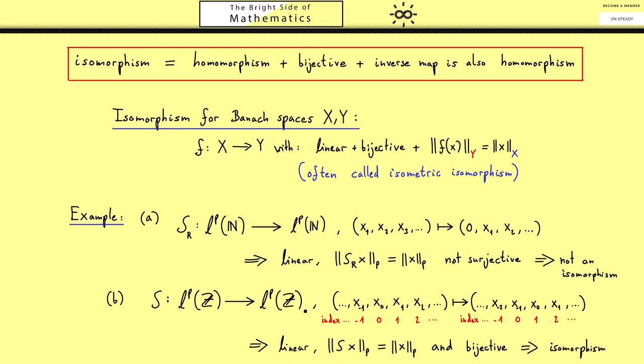Of course these examples are very simple but they are defined on an infinite dimensional Banach space. And we have even seen an example of a linear map between the same Banach space which is injective but not surjective. And this is something that only can happen for an infinite dimensional Banach space.